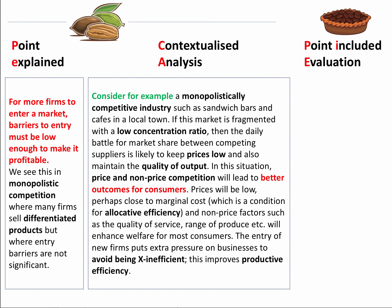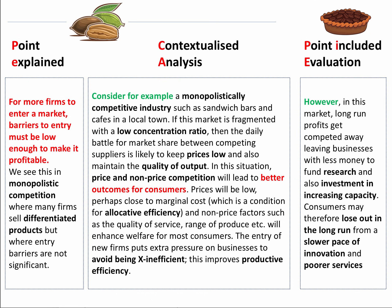The entry of new firms puts extra pressure on businesses to avoid being X-inefficient, which improves productive efficiency. However, in this market of monopolistic competition, long-run profits get competed away, perhaps leaving businesses with less money to fund research and increased investment in raising capacity. Consumers may therefore lose out in the long run from a slower pace of innovation and perhaps poorer services. So here's our PECAN PIE point: make the points, build the analysis, put it in context, give a good example, but then evaluate the point that you've made.